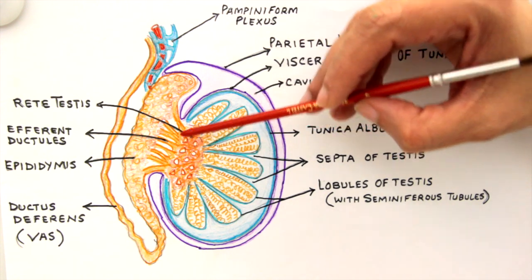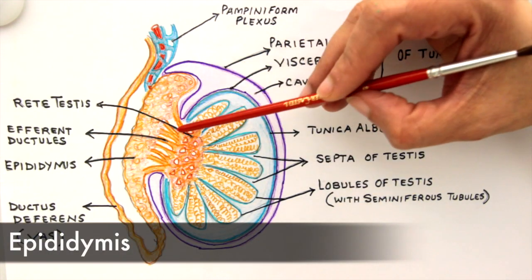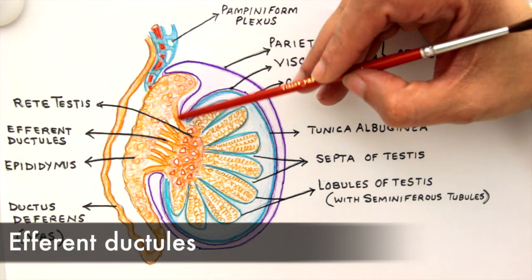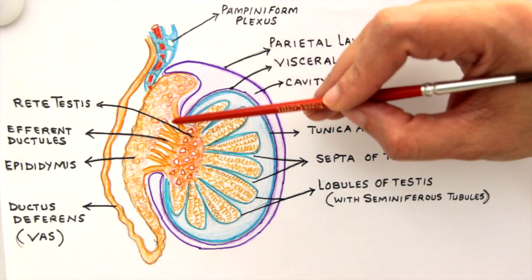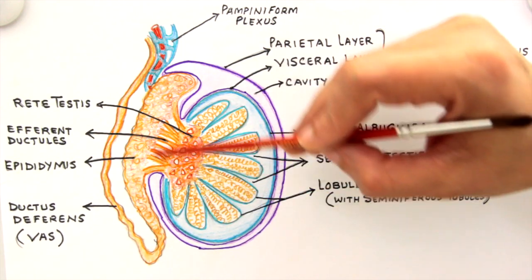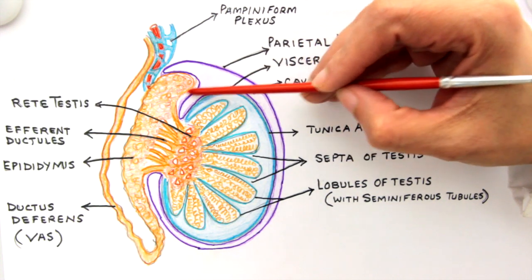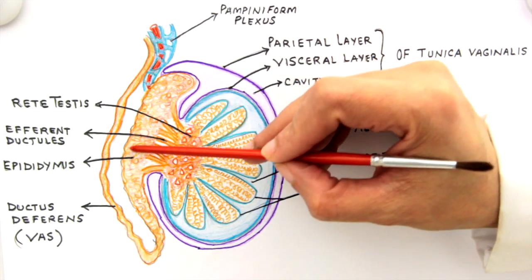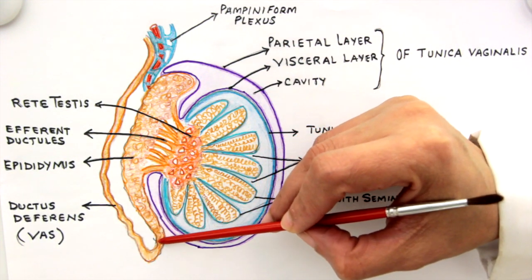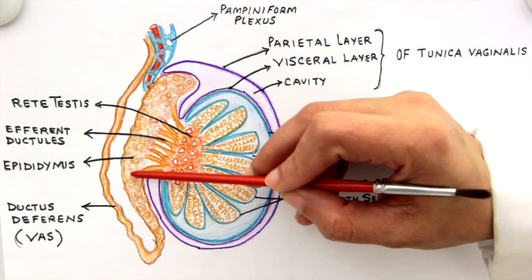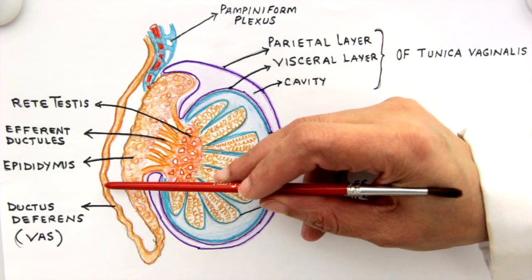The rete testis connects to the coiled body — the epididymis — through ductuli efferentes or efferent ductules. These straight columns are the efferent ductules connecting the seminiferous tubules with the epididymis. The epididymis has a globular head region, a slender body, and a tapering tail region, whose cavity continues with the cavity of the vas deferens or ductus deferens.